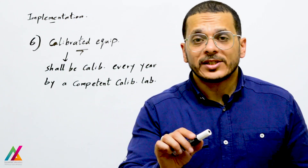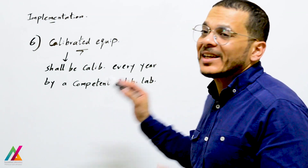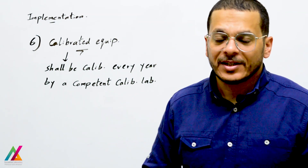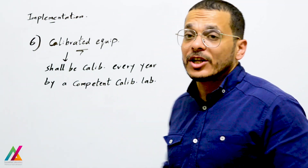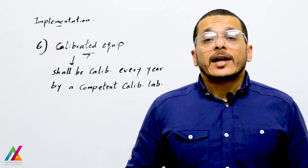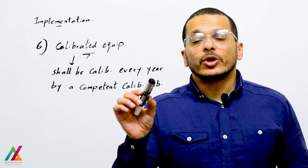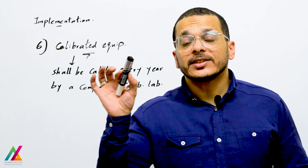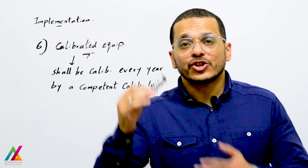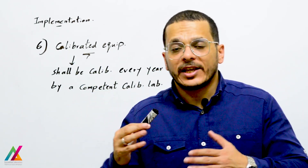All equipment used to measure environmental conditions inside the lab shall be calibrated every year. For example, thermometers or data loggers shall be calibrated by an accredited calibration lab annually. You shall keep a calibration certificate for each piece of equipment and attach a label showing the calibration date, the due date for the next calibration, and whether it is accepted for use.